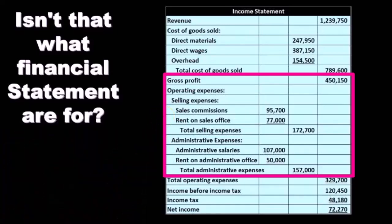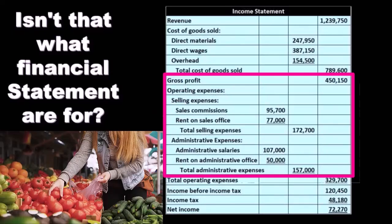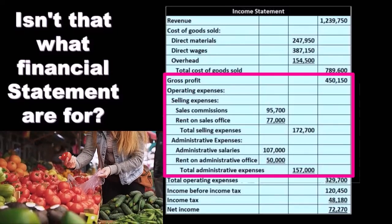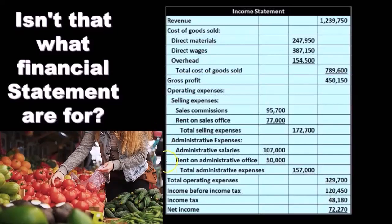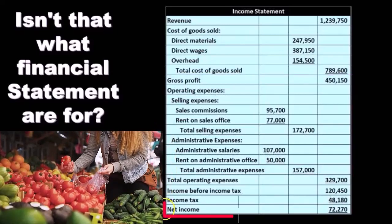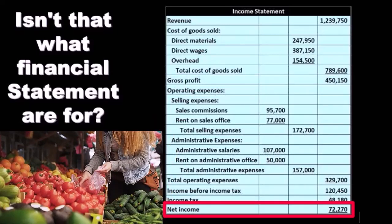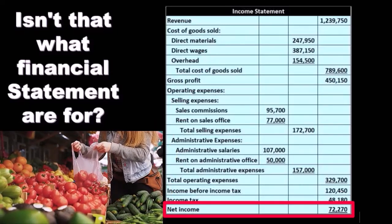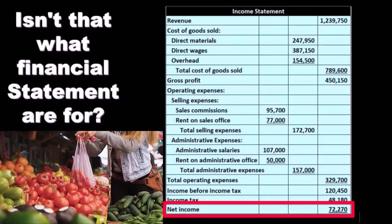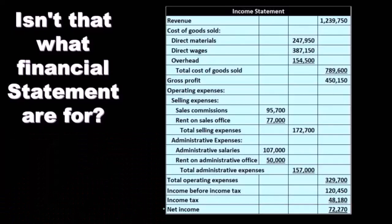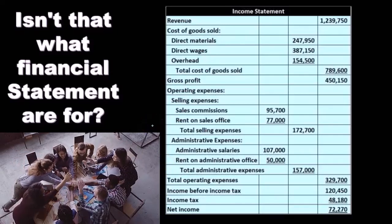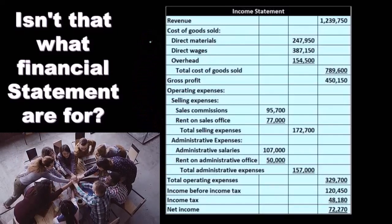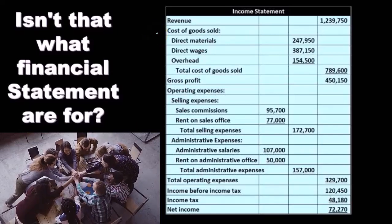Then we have the other types of expenses — the operating expenses of selling expenses and administrative expenses. These administrative and selling expenses are grouped in terms of what types of things they are for — clearly for selling and administrative. They're grouped by their function, not by the behavior or how the costs act. Therefore, net income is the gross profit minus the operating expenses. This gives a great summary of what has happened, based on groupings of why we made these expenses to help achieve the goal of revenue generation.